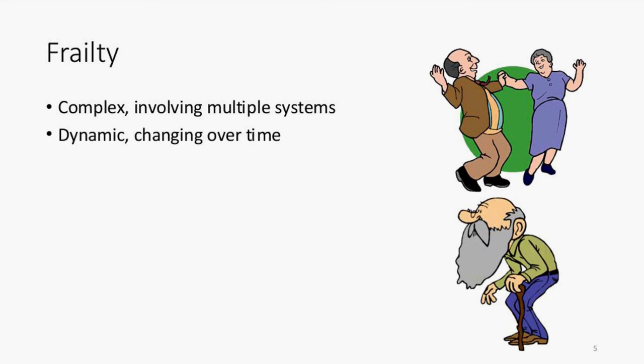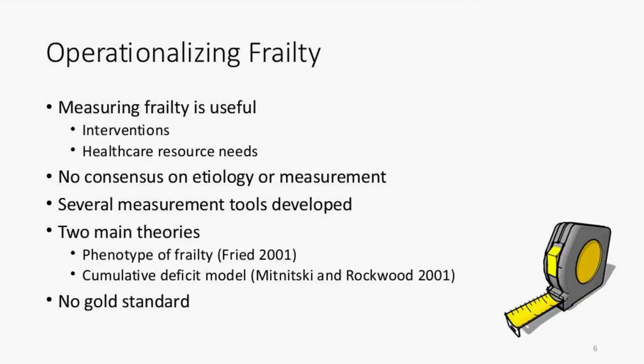Frailty as a concept is complex. It involves multiple health systems and has been linked to physical health, psychological health, and social factors as well. Frailty is also dynamic — it changes over time, so a person's frailty level can increase or decrease. This concept is useful for planning healthcare interventions, as an outcome measure, and also for assessing the health resource needs of a population.